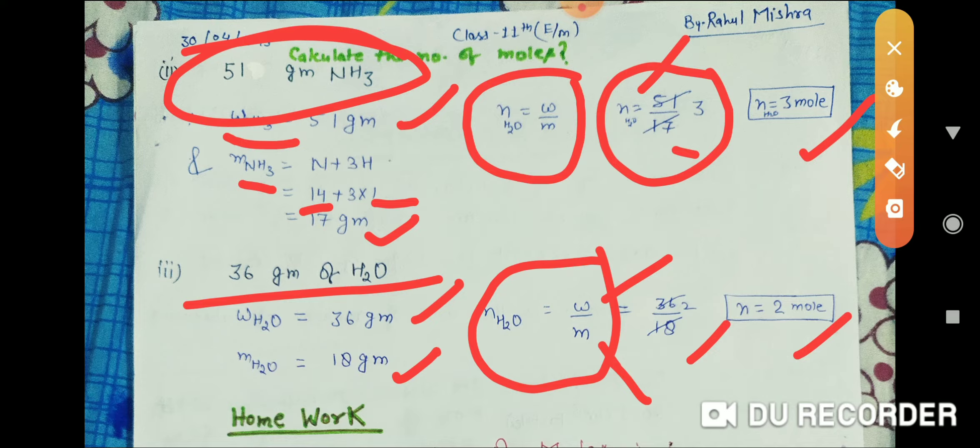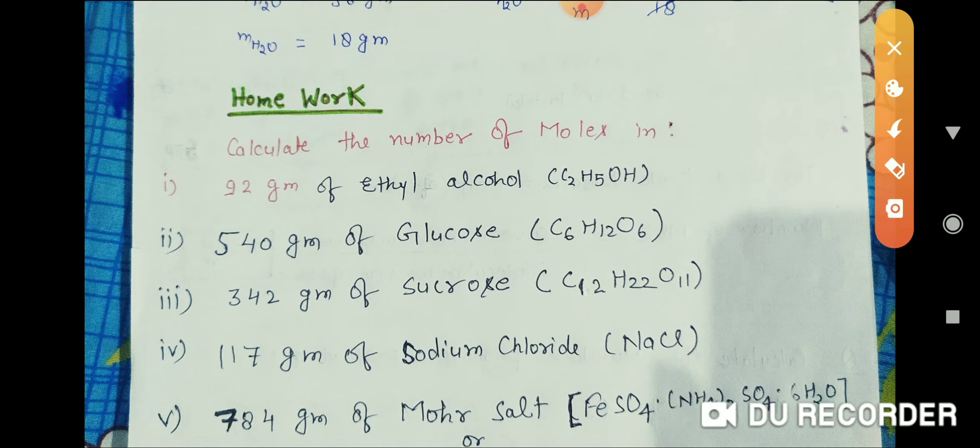Now there is some homework you have to do. The homework is: calculate the number of moles in the following. (i) 92 grams of ethyl alcohol.